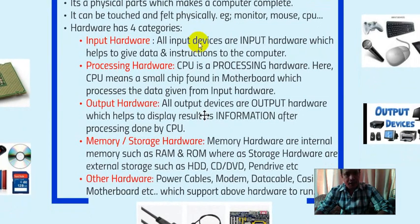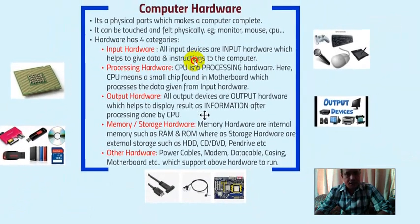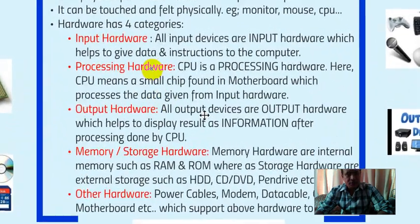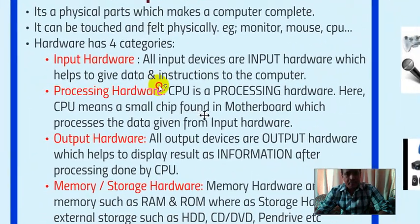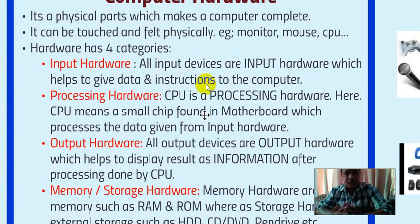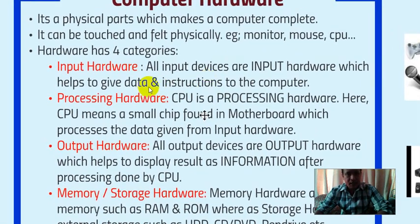Hardware is normally categorized into four categories, with one exceptional. The first category is input hardware. All input devices are input hardware, which help to give data and instructions to the computer. Input devices like keyboard, mouse, scanner, and joystick are all input hardware.